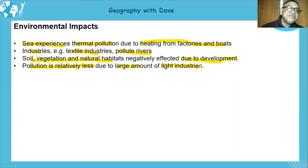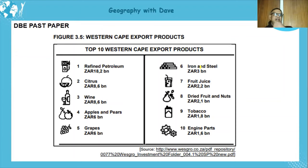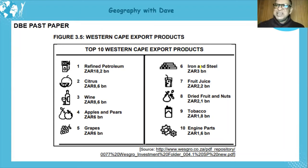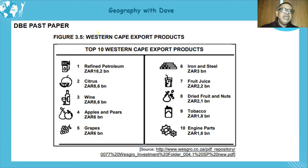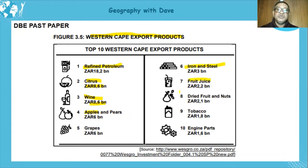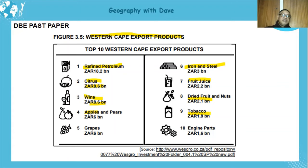Now let's look at a DBE past paper question relating to the western cape. It's a relatively simple one but gives direction on how to interpret information. The question deals with western cape exports, listing items such as refined petroleum, citrus fruit, apples, iron and steel, fruit juice, dried fruit, tobacco, and engine parts — giving the value in South African rands for each export product.